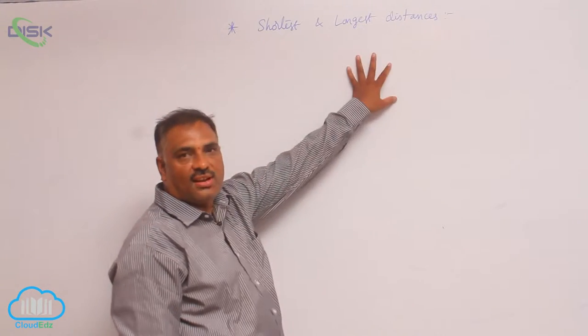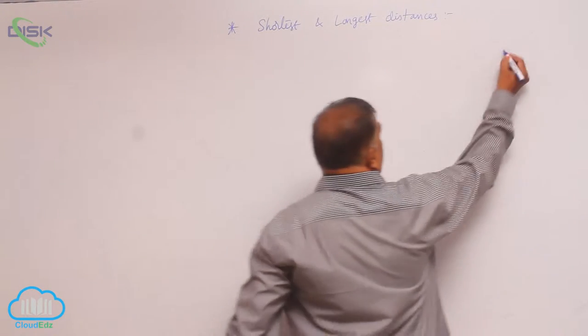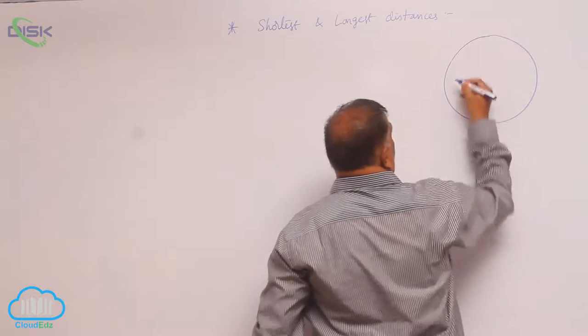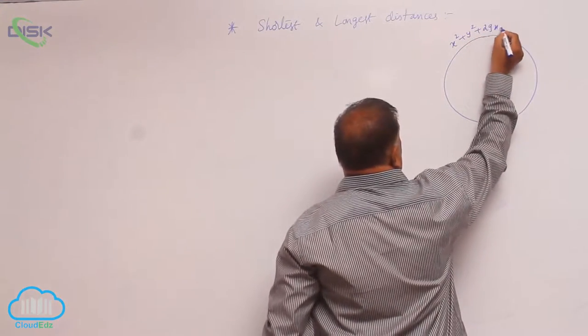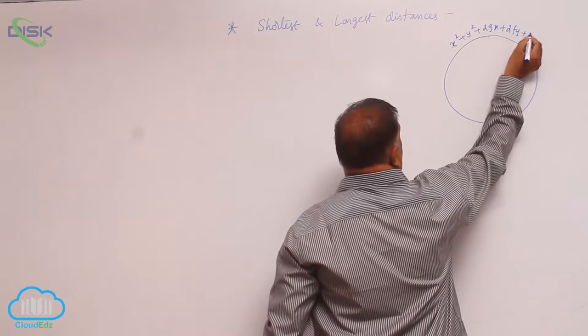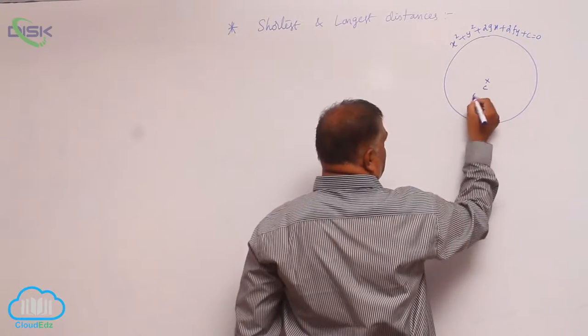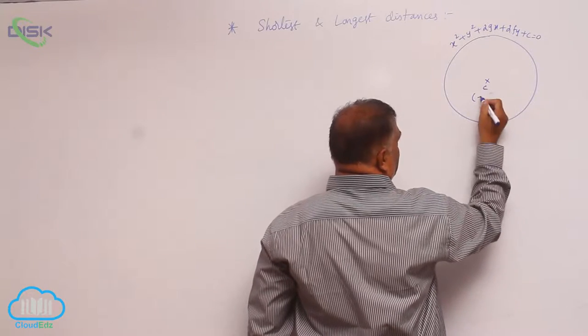We will discuss the shortest and longest distances. Consider the circle equation x square plus y square plus 2gx plus 2fy plus c equals 0. The center is minus g comma minus f.